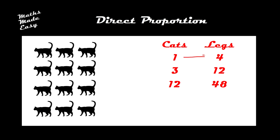You should notice that cats times four gives you legs. Every single time I add another cat — say thirteen cats — I always add on four legs, so fifty-two legs. Every time I add one cat, I always add four legs. Every time I add four legs, I always add one cat. This of course assumes that all cats have four legs.